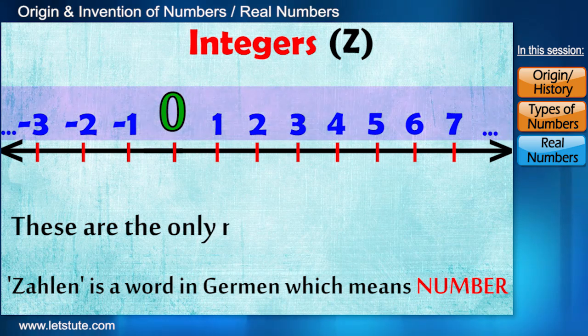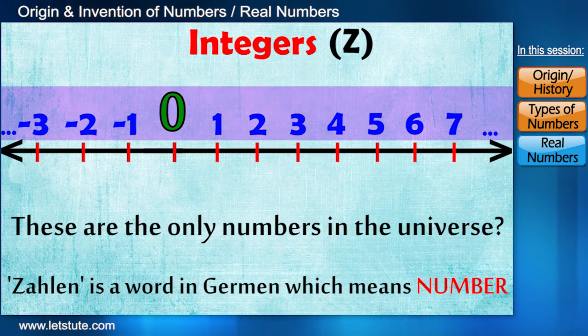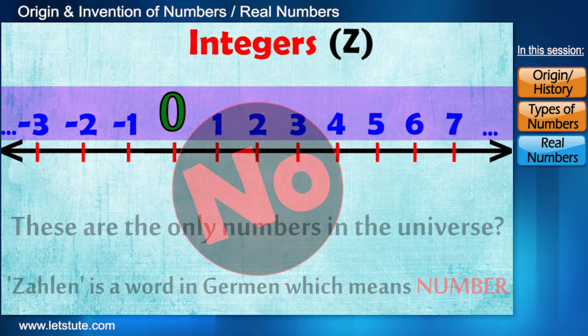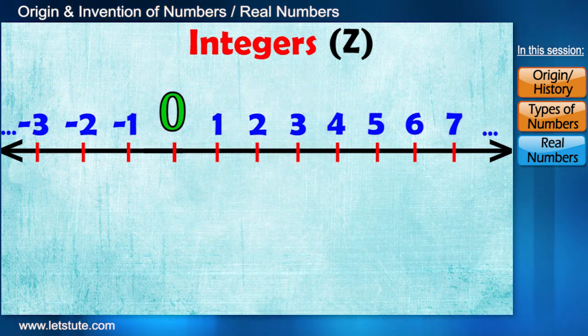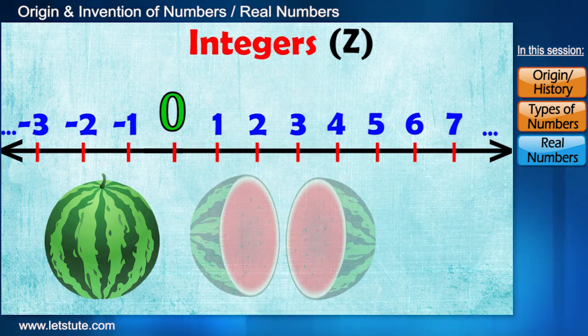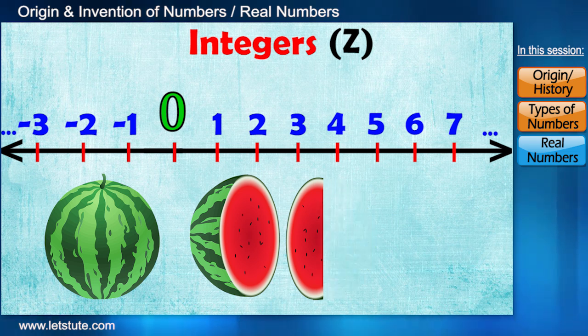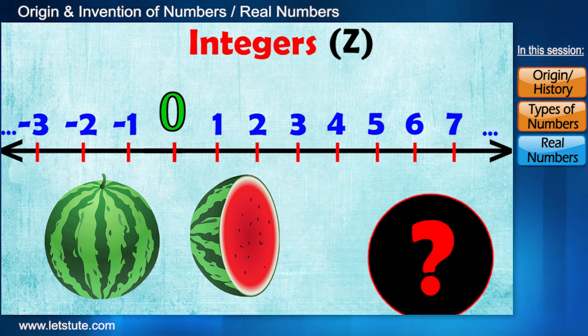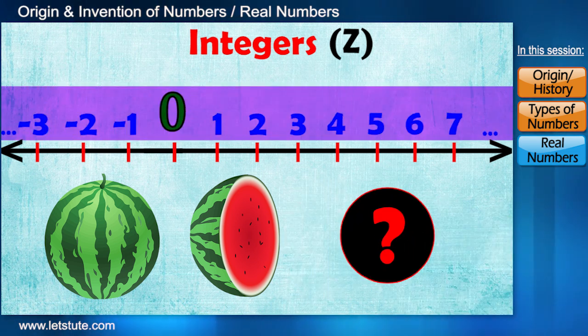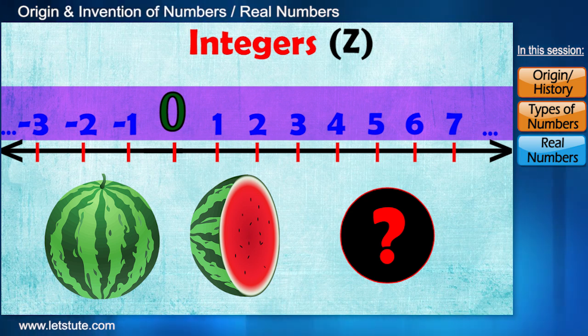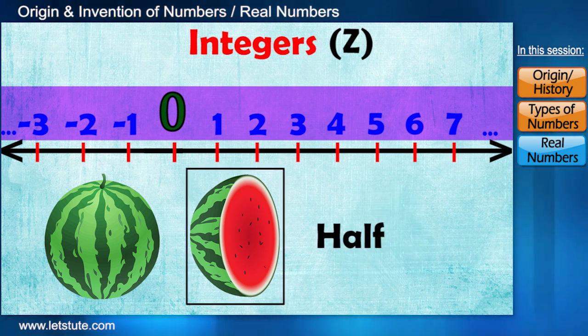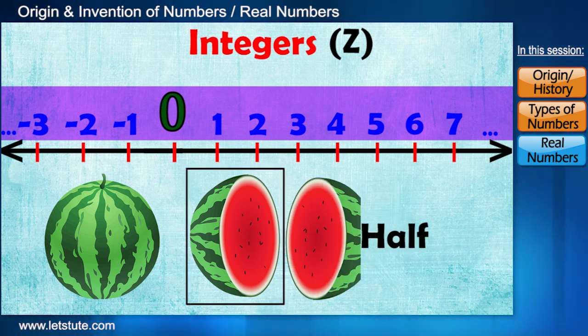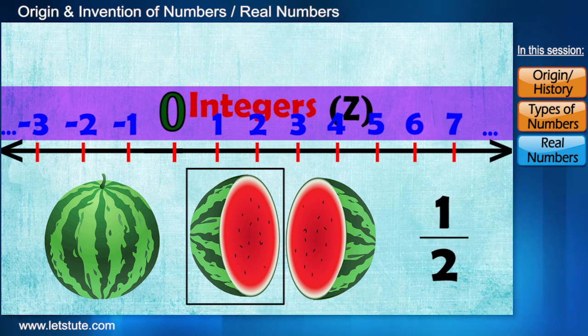So do you think these are the only numbers in the universe? No. Let's take an example. Suppose you have a watermelon and divided into two equal parts and you ate one part of it. Can you represent how much watermelon you had by using these numbers? It's not possible by using these numbers, right? So here comes the need of a different kind of number to represent half. Since half means one out of the two equal parts, we write half as one upon two, also known as fraction.